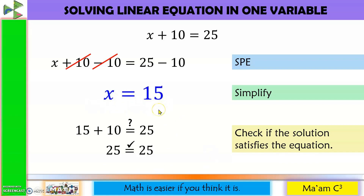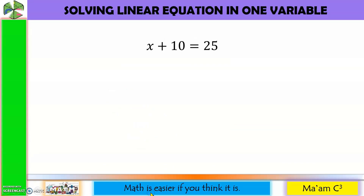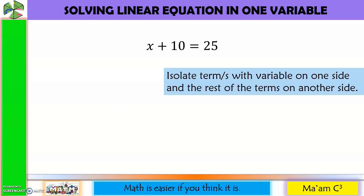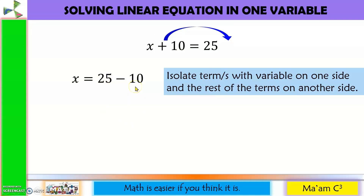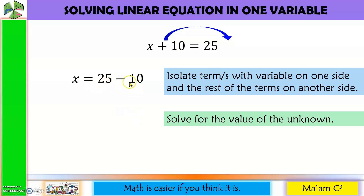There is also a shorter way. Again, x plus 10 equals 25. This time, we isolate the term with the variable on one side and the rest on the other. We move positive 10 to the other side — when a term crosses the equal sign, its sign changes — so it becomes minus 10. Thus, x equals 25 minus 10, which equals 15. Same answer.